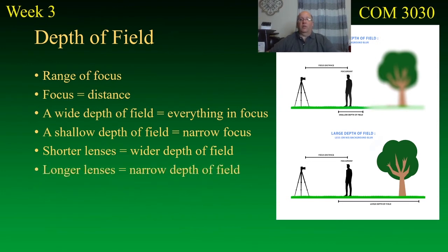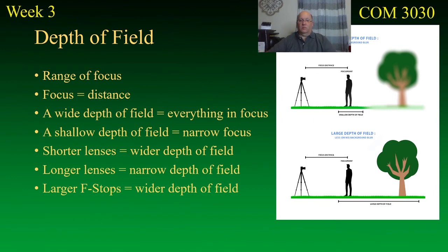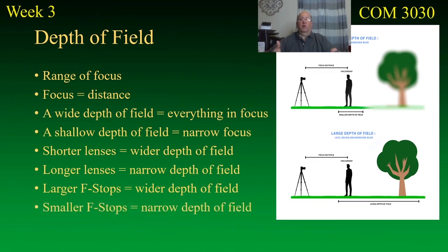Longer lenses narrow the depth of field, and larger f-stops widen the depth of field. If you've got a really small lens opening, that's going to give you more depth of focus — that's something you can control even if you've got an unfavorable focal length. Smaller f-stops give you a narrow range of focus, so if you have to open the lens all the way to f/2.8 that could give you a very narrow depth of field, and there's not much you can do about that.